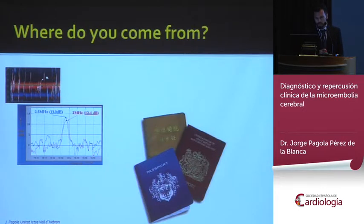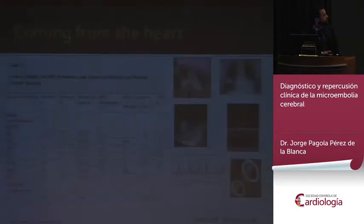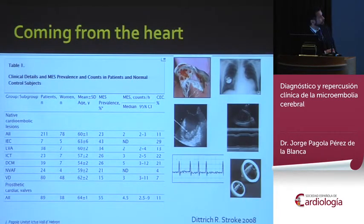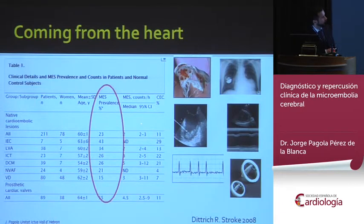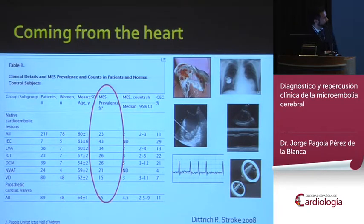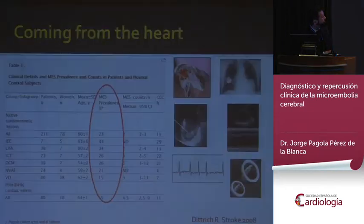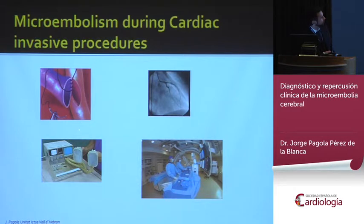We can even know where the embolism comes from. This study shows the prevalence of microembolism from different cardiac sources: infectious endocarditis, left ventricular aneurysm, thrombus inside the heart, dilated cardiomyopathy, non-valvular atrial fibrillation, and prosthetic valves. The incidence of microembolism in these diseases is not low. Additionally, in invasive diagnostic procedures such as coronary bypass, artery grafting, and angiography, microembolisms can also be detected.